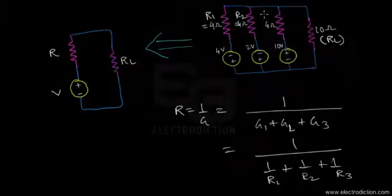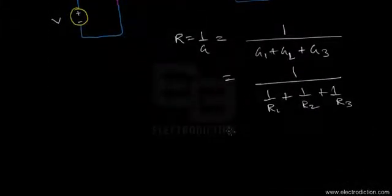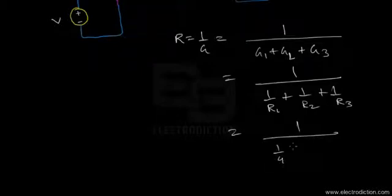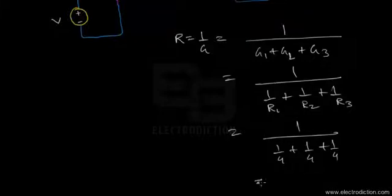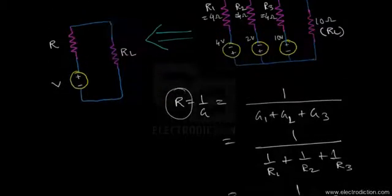R1, R2, and R3 all have equal values of 4 ohms. So we get 1/4 + 1/4 + 1/4, which gives us a net resistance R of 4/3 ohms.